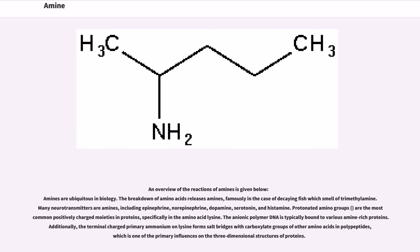An overview of the reactions of amines is given below. Amines are ubiquitous in biology. The breakdown of amino acids releases amines, famously in the case of decaying fish which smell of trimethylamine. Many neurotransmitters are amines, including epinephrine, norepinephrine, dopamine, serotonin, and histamine. Protonated amino groups are the most common positively charged moieties in proteins, specifically in the amino acid lysine. The anionic polymer DNA is typically bound to various amine-rich proteins. Additionally, the terminal-charged primary ammonium on lysine forms salt bridges with carboxylate groups of other amino acids and polypeptides, which is one of the primary influences on the three-dimensional structures of proteins.